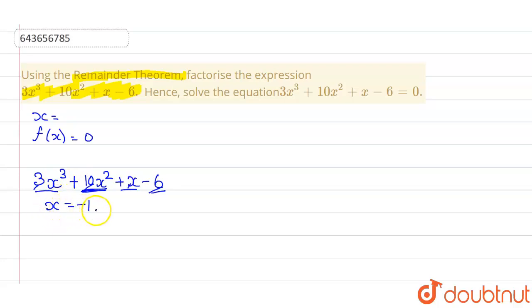Now, if x equal to minus 1, this means here if I substitute the value of x as minus 1 in the function, I will get 0 substituted 3 into minus 1 cube plus 10 into minus 1 square plus minus 1 minus 6. This will give us minus 3 plus 10 minus 1 minus 6 equal to 0 satisfied.